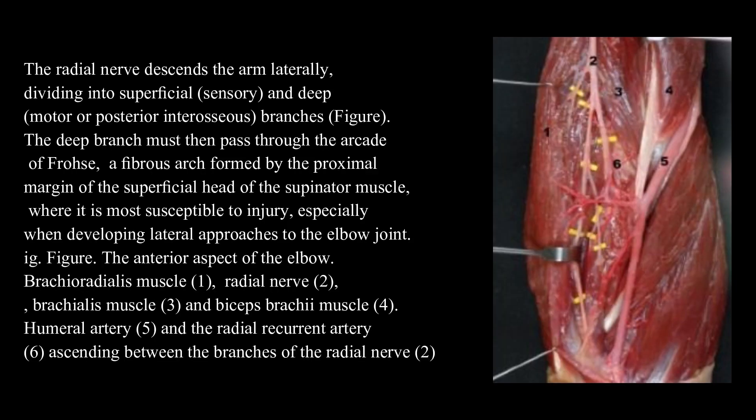The radial nerve descends the arm laterally, dividing into superficial (sensory) and deep (motor or posterior interosseous) branches. The deep branch must then pass through the arcade of Frohse — a fibrous arch formed by the proximal margin of the superficial head of the supinator muscle — where it is most susceptible to injury, especially when developing lateral approaches to the elbow joint.